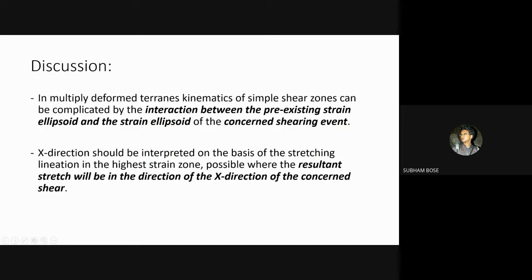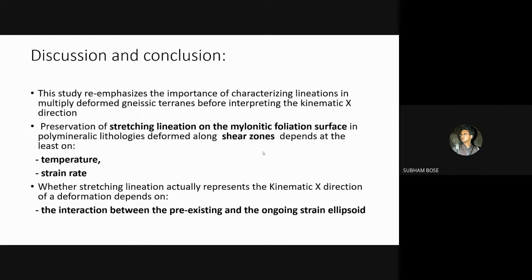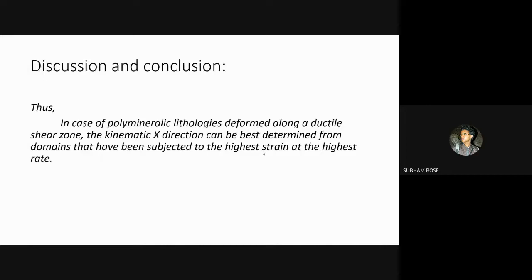Therefore, in multiply deformed terrains, kinematics of simple shear zones may get complicated due to the interaction between the pre-existing strain ellipsoid and the strain ellipsoid of the ongoing shearing event. The X direction should be interpreted on the basis of the stretching lineation in the highest possible strain zone, where the resultant stretch will most likely be in the direction of the X direction of the concerned shear. This study re-emphasizes the importance of characterizing lineations in multiply deformed terrains before interpreting the kinematic X direction. Whether a stretching lineation will be preserved on the mylonitic foliation surface in deformed polymineralic lithologies depends on temperature and strain rate, and the evolution of stretching lineation in late shear zones depends on the interaction between the pre-existing and the ongoing strain ellipsoid.